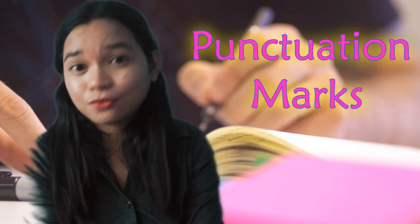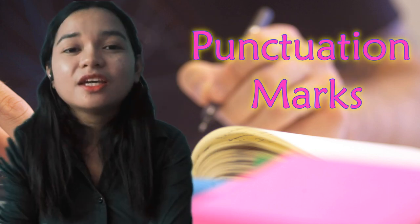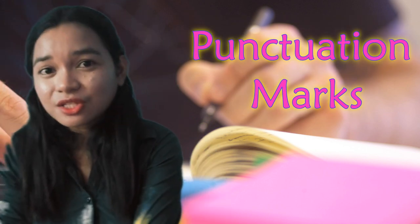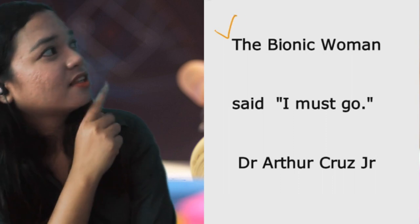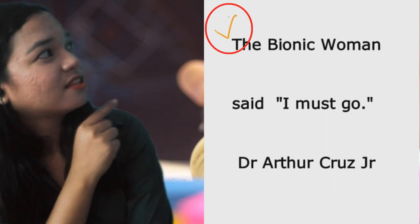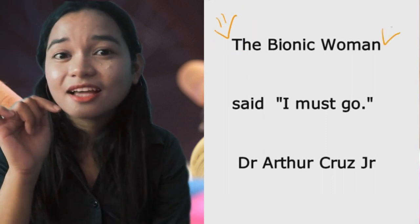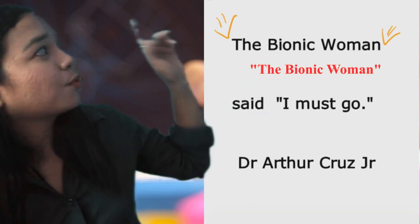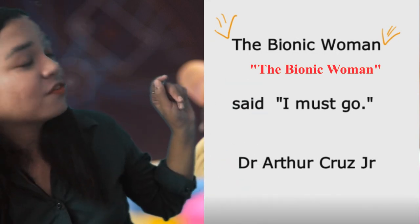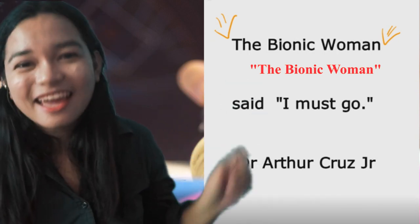Now, what are these copywriting symbols? First, the punctuation marks. For inserting quotation marks or apostrophe, use this symbol. Place the punctuation mark inside the symbol and insert it right above where you wanted to insert the punctuation mark.